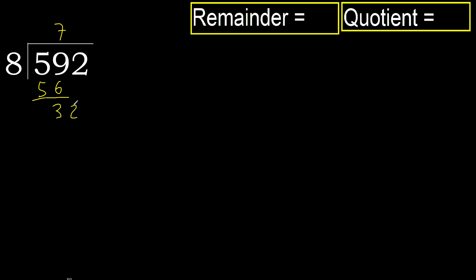Next: 32 and 8. Multiply by 5: 40 — it's greater. Multiply by 4: 32. It's not greater. Subtract: 32 minus 32 is 0.